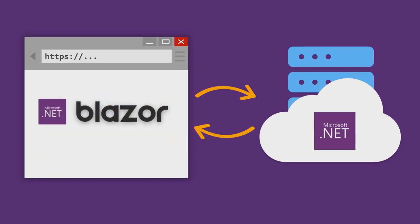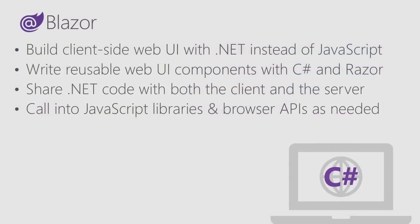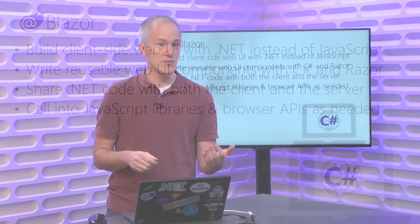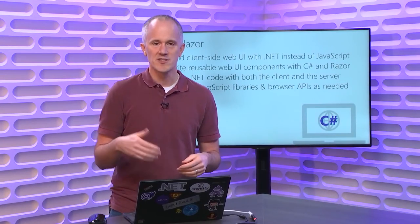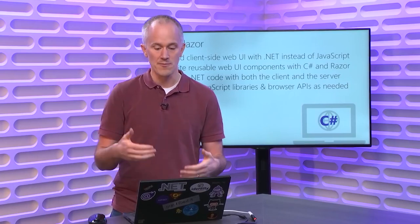Well, this is no longer the case. You can now write your client-side web app logic using .NET with Blazor. Blazor is a client-side web UI framework where you get to write .NET and C# instead of JavaScript. You write UI components that encapsulate your UI logic using C# and Razor. You can then share your .NET code — the same assemblies — on both the client and the server. If you've got some validation logic, you can use it on both sides of the wire. If you need to call into JavaScript code, you can still do that through a JavaScript interop mechanism.